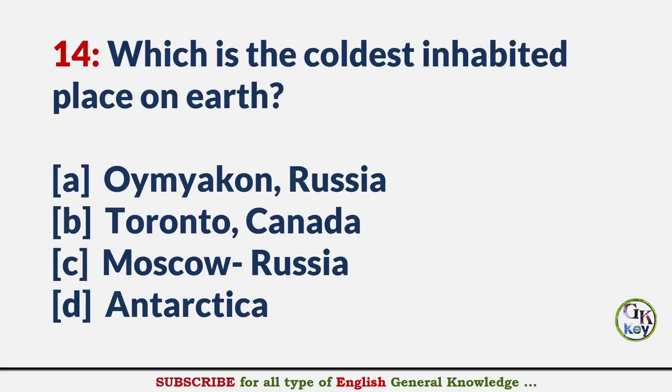Which is the coldest inhabited place on Earth? Answer A: Oymyakon, Russia.